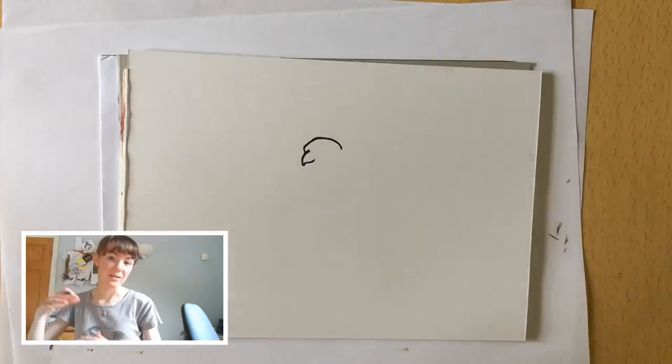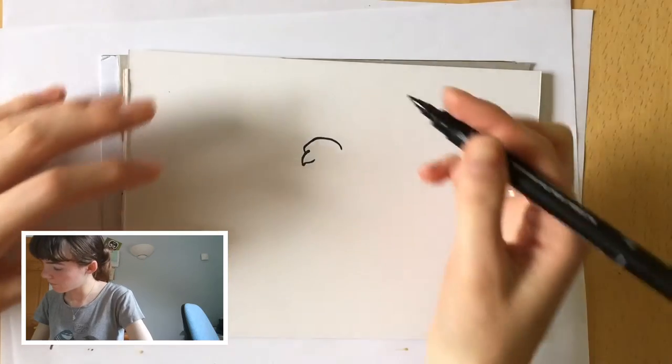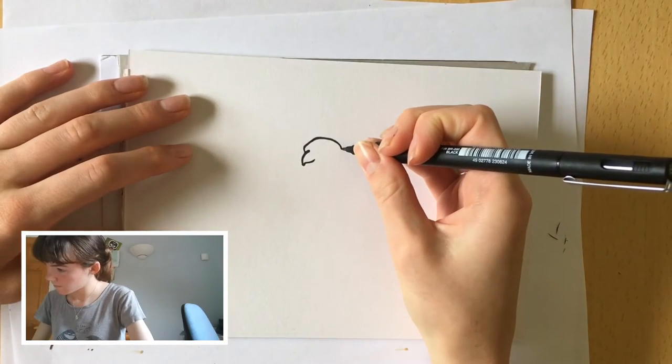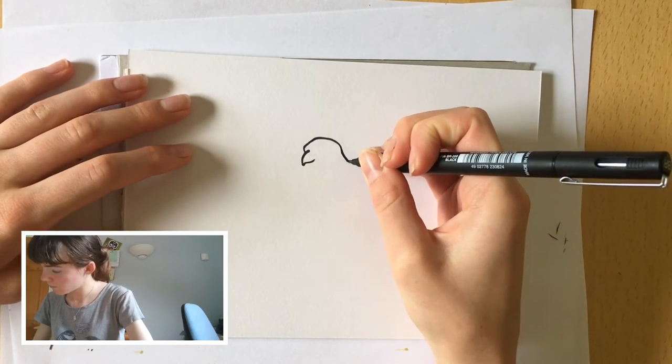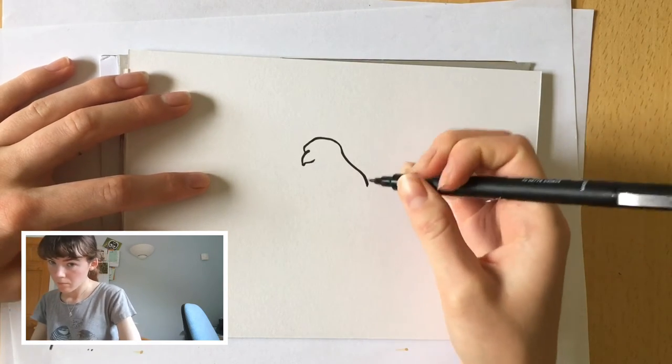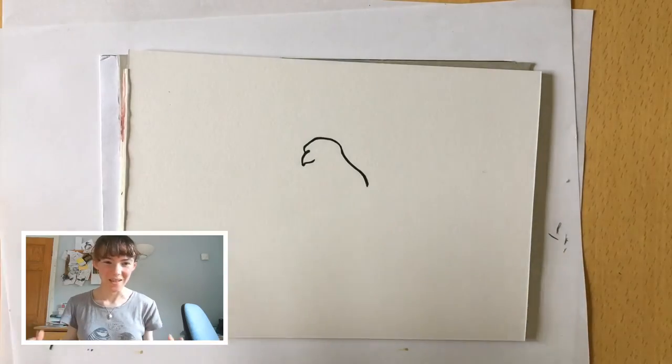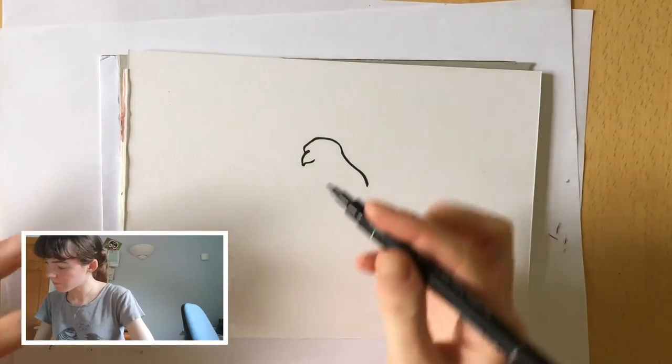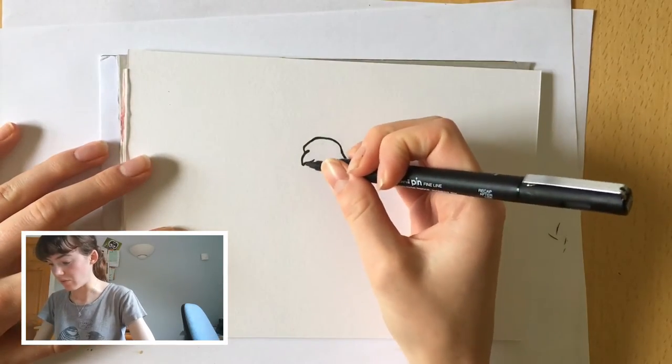And then we'll continue the head on the right hand side down the back of the falcon. And then we'll do the rest of the falcon because the feathers are going to be a bit more complicated. So this is just continuing down from the head here.